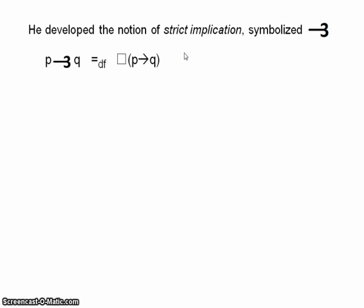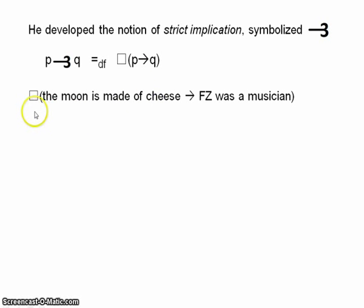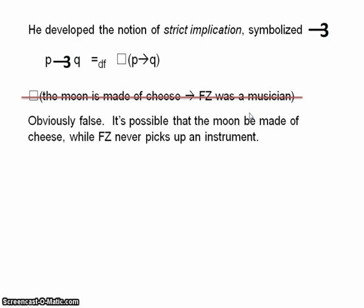So, in this case, it's true that Frank Zappa was a musician. Is it necessarily true that if the moon is made of cheese, then Frank Zappa was a musician? Well, obviously not. It could have been the case that the moon be made of cheese, but Frank Zappa be a research chemist instead.